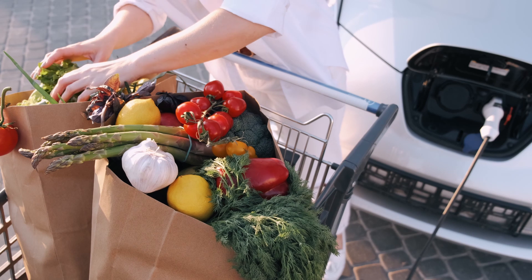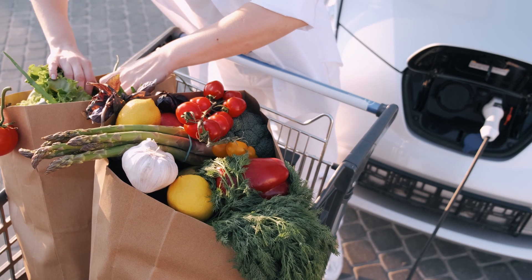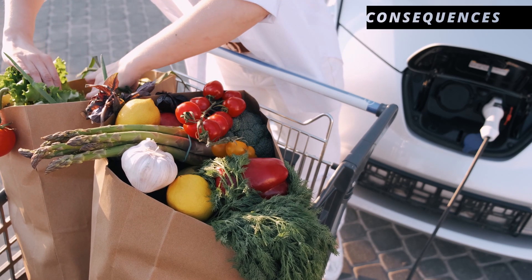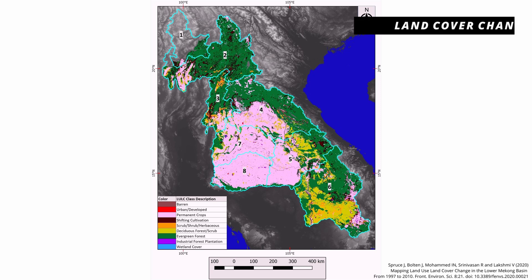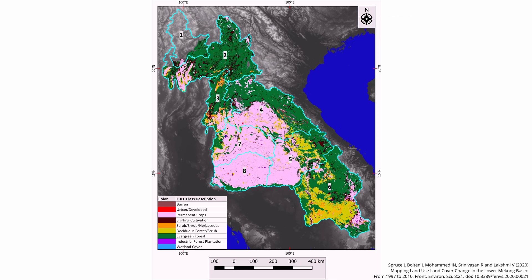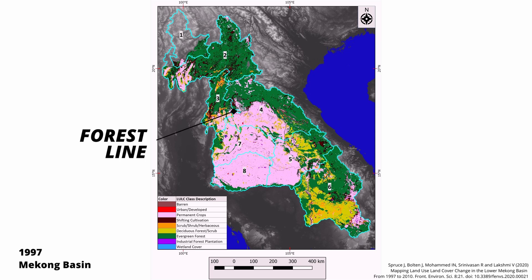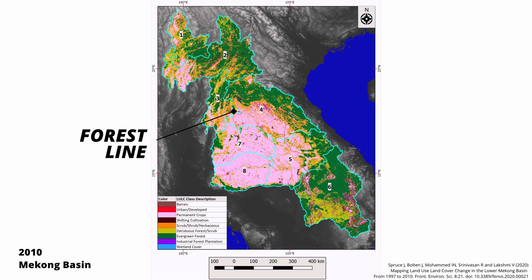But all this talk about increased production isn't all sunshine and roses, and there are some consequences that accompany it. For example, we have land cover change, which means the type of land that covers an area has changed. You could see this in the Mekong Basin, which is in Southeast Asia — notice the tree line in 1997, which is where the green and pink meet, and look how far back it receded in 2010, thus demonstrating that the land cover has changed.